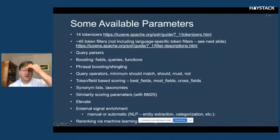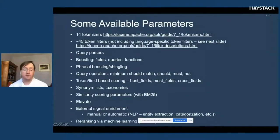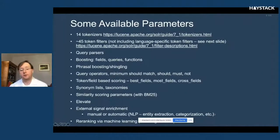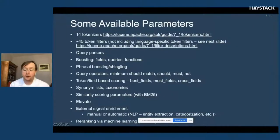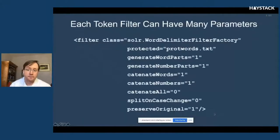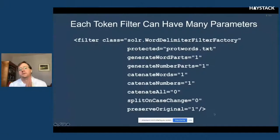You can now also manipulate the scoring parameters in BM25, use the elevate file for Solr, alternate methods to do that in Elasticsearch, external signal enrichment including analysis of query logs, and re-ranking via machine learning, whether that's learning-to-rank or other things. And of course there are all sorts of other ways of measuring similarity including with dense vectors. The number of parameters we have to play with is rather astounding.